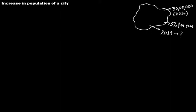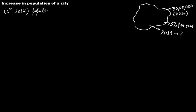You have to find the population at the end of 2019. The time period is three years. For the first period, that is 2017, you can take the population at the end of 2016 as the principal. So the population at the beginning of 2017 is 30 lakh.